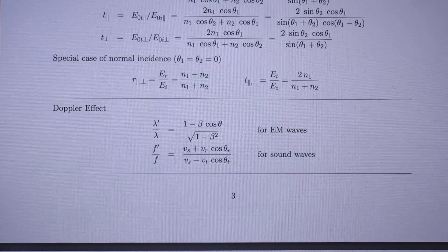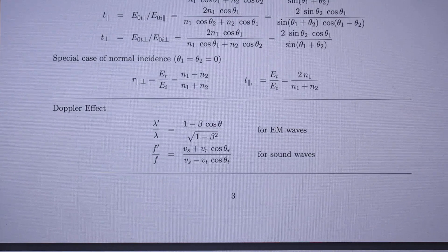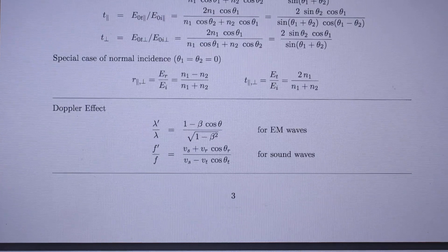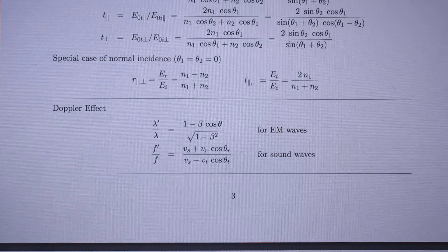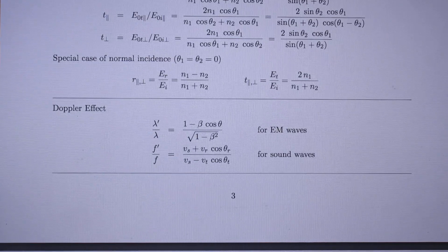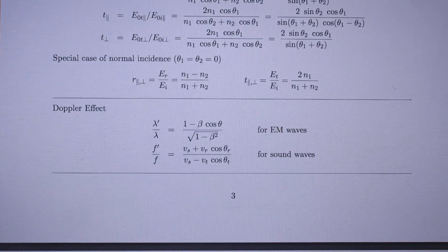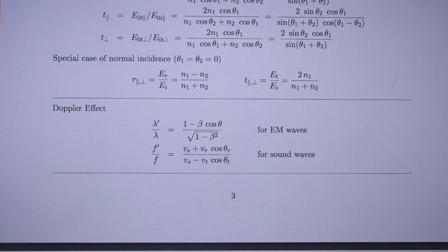Doppler effect — that has the time dilation also in it, because 1 over the square root of 1 minus beta squared is in there.